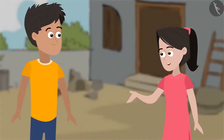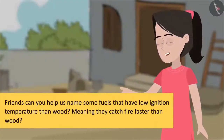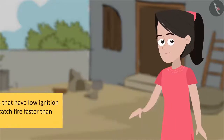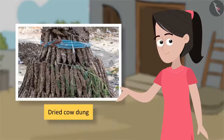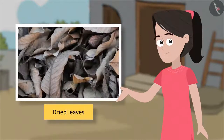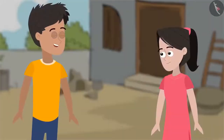That is a good question. What can we use to light them? Friends, can you help us name some fuels that have a lower ignition temperature than wood? Meaning they catch fire faster than wood. Did you say kerosene? But we don't have that. Dried cow dung is useful too, but we don't have that either. Dried leaves — yes, we could collect dried leaves and use them to fire the twigs and branches. Dried leaves catch fire much more easily than twigs. I will collect them too.